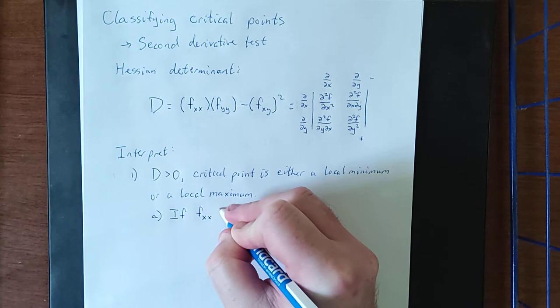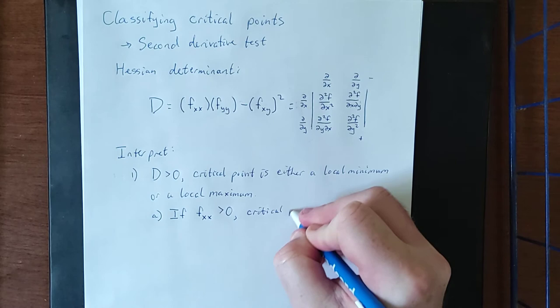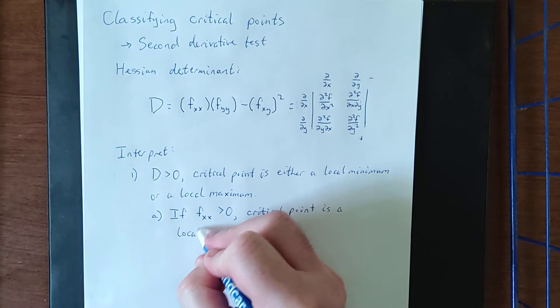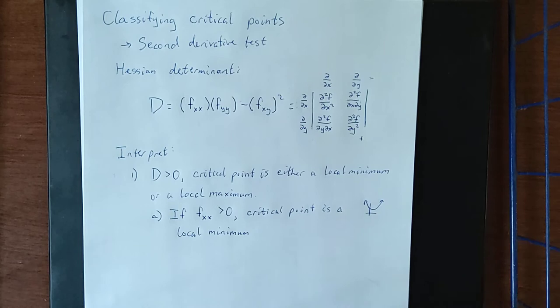So if the second partial derivative with respect to x is greater than zero, that is indicative of the fact that we have concave up. So the critical point is a local minimum. Concave up means that a trace of that curve would look like this, therefore giving us a local minimum.